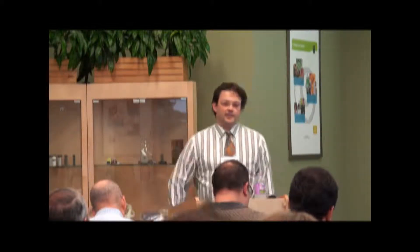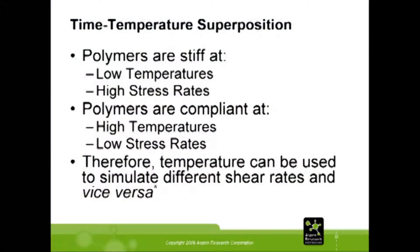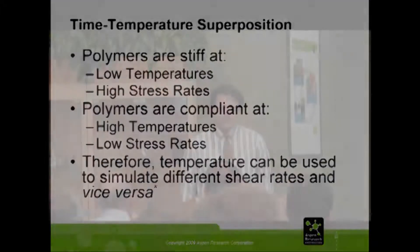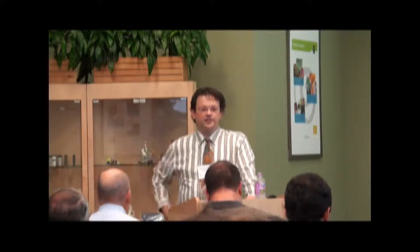This technique takes advantage of an observation you should all be aware of: polymers are stiff at low temperatures, and most things are stiffer at low temperatures than at higher temperatures. We also know that at high shear rates polymers will be stiff. The converse is true — high temperatures and low shear rates produce very similar behavior. The technique is a mathematical way of converting one into the other: high temperatures can be equated to low shear rates and vice versa. There's a lot of math behind it, but the technique has been well-validated — it's been used for over 70 years.